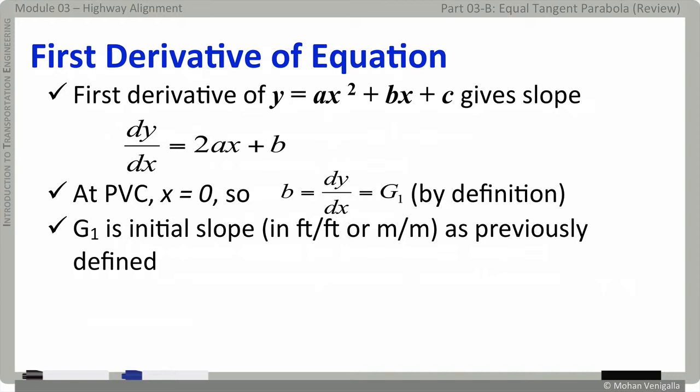If you take the first derivative of the equation of parabola, Y equals AX square plus BX plus C, it will become dY/dX equals 2AX plus B. What is dY/dX? It is nothing but the slope of the curve at a given point. Now, let's take one given point, which is the beginning of the curve, the origin of the curve, which is PVC, which is where we started. At the beginning of the curve, X is zero. So, if you have dY/dX equals 2AX plus B and X is zero, that automatically becomes dY/dX is B. And what is dY/dX? It's the slope of the tangent, which is nothing but G1, which is what we started with. Therefore, parameter of parabola B is equal to the initial tangent G1, or initial slope, if you will. And it is in feet for feet or meter for meter as we previously defined. It is just a fraction.